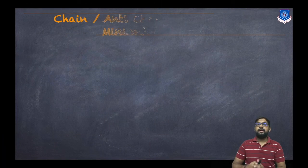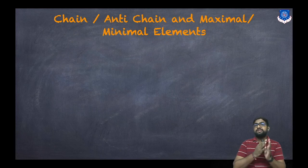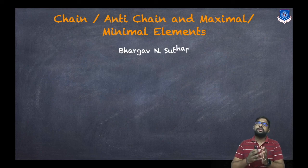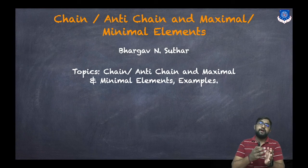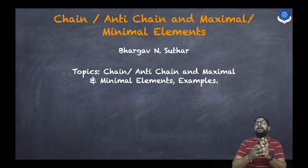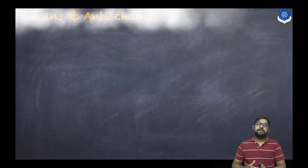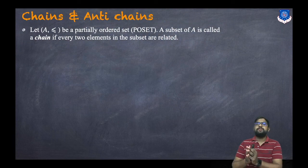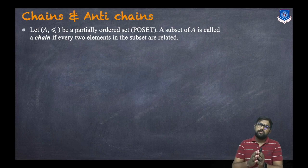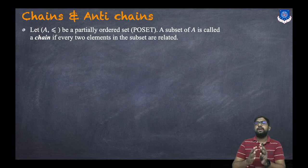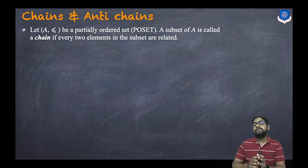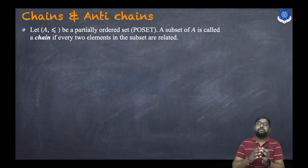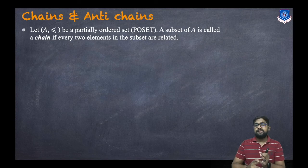Hey everyone, this is Parikos Uthar. Today we'll learn about what is a chain, what's an anti-chain, what is a maximal element, and what is a minimal element. We will discuss some examples and see how to find these. First, let us understand what is a chain and what is an anti-chain. Let (A, ≤) be a partially ordered set — a set having a partially ordered relation, which is reflexive, anti-symmetric, and transitive.